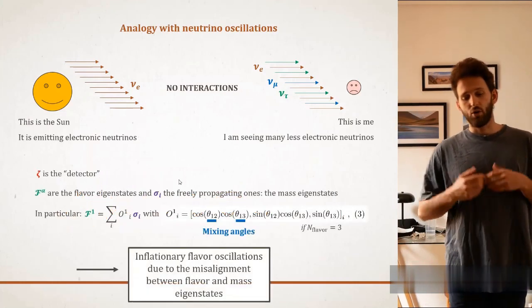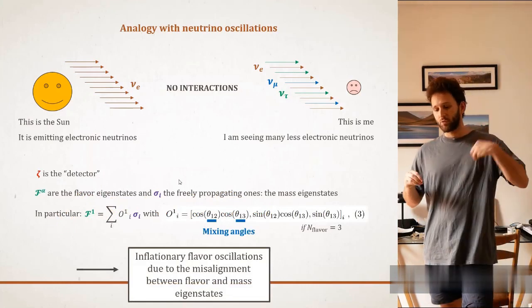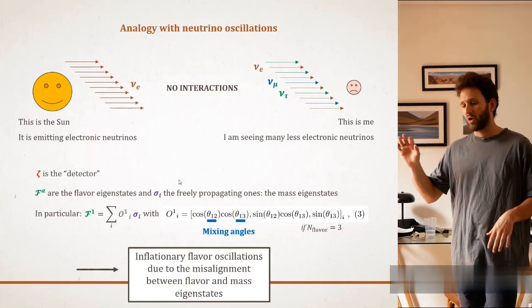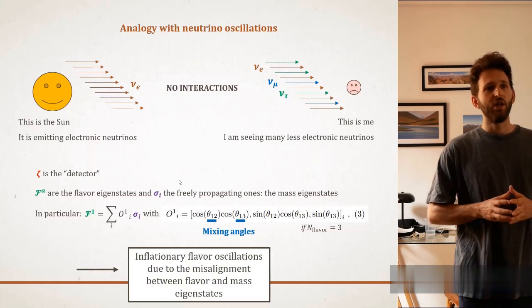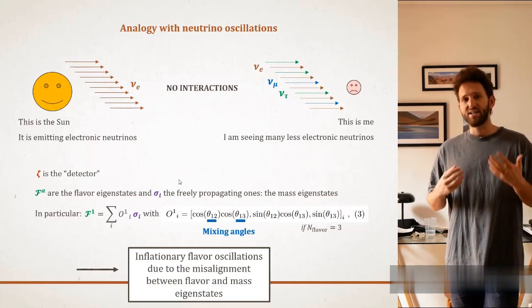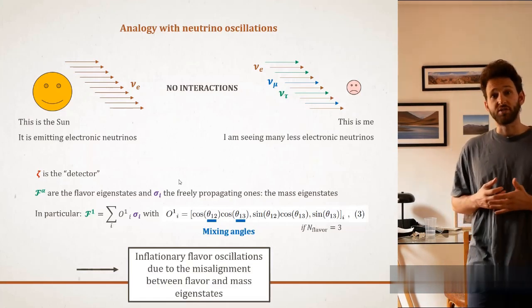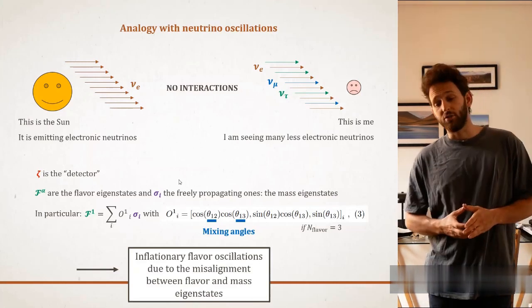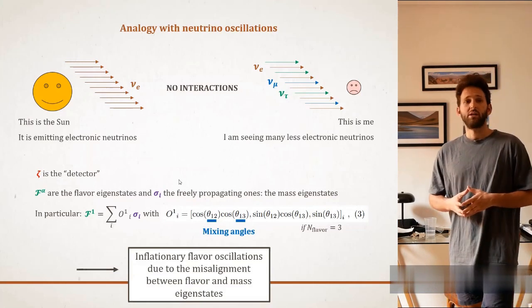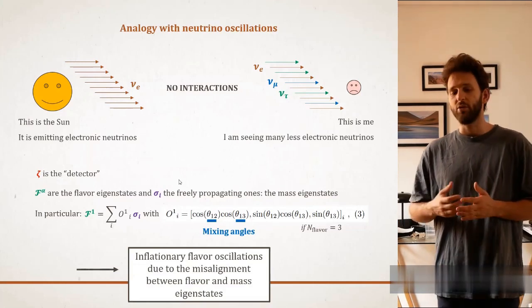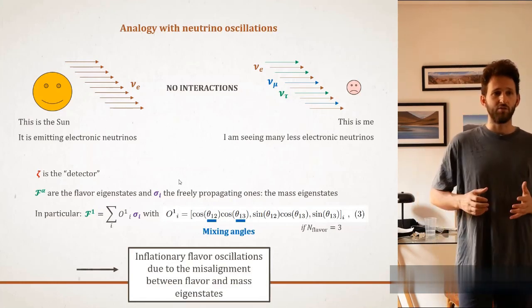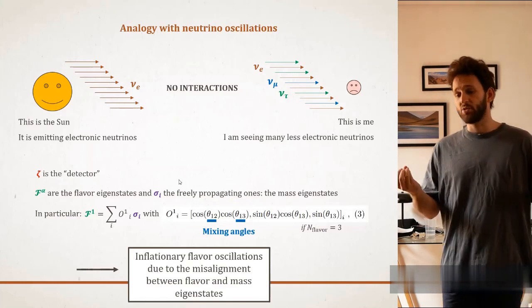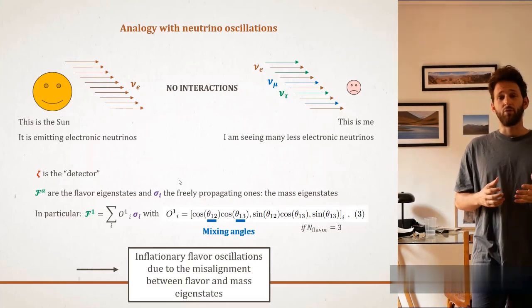So, in our case, the situation is analogous, as our detector would be the curvature fluctuation zeta, that will give rise to cosmological observations that we have at hand, and the F^α are the flavor eigenstates, the equivalent of the flavor for the neutrinos, and σ_i are the freely propagating mass eigenstates of our system. And, in particular, the first of these flavor eigenstates, F^1, can be decomposed as a linear combination of the mass eigenstates. And the coefficient in this linear combination can be written in terms of mixing angles, just like, again, quarks and neutrinos of the standard model of particle physics. So, the lesson that we draw here is that, due to the misalignment between the flavor and the mass eigenstates during inflation, we should be able to observe inflationary flavor oscillations.